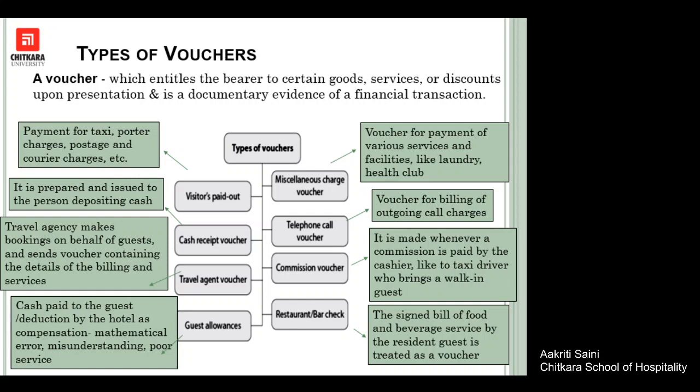The travel agent voucher is sent by the travel agent when certain bookings are made, and it includes hotel bookings, airline bookings, and everything the travel agent has arranged. Guest allowance is very important and should not be confused with a guest discount — it is any cash given or deduction made from the guest bill as compensation for a mathematical error, misunderstanding, or poor service. For example, if the hotel promised one hour of good internet connectivity but it was unavailable, a deduction is made as compensation. This is known as guest allowance.